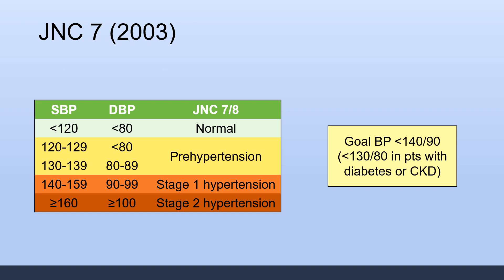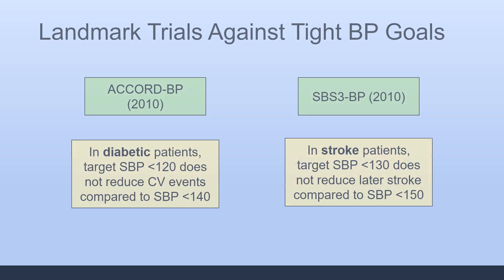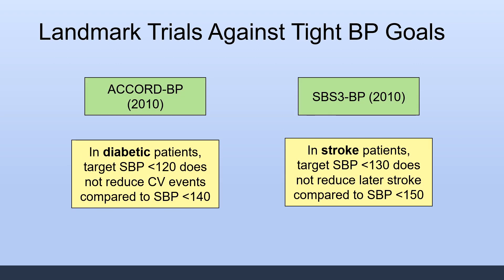This was generally accepted for many years until 2010, when there were a couple of landmark trials which argued against tighter blood pressure goals. One of these that you should be very familiar with is the ACCORD blood pressure trial, conducted in 2010, which found that in diabetic patients, a target blood pressure of less than 120 did not reduce cardiovascular events compared to a target of less than 140. Additionally, patients in the lower blood pressure group experienced more severe adverse events.